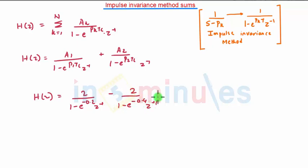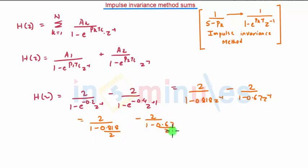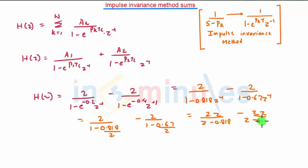We now find the values of the exponential terms: e^(minus 0.2) and e^(minus 0.4). Substituting these values we get 2/(1 minus 0.818 × z^(-1)) minus 2/(1 minus 0.67 × z^(-1)). Converting to positive powers of z, we write this as 2/(1 minus 0.818/z) minus 2/(1 minus 0.67/z). Multiplying numerator and denominator by z gives 2z/(z minus 0.818) minus 2z/(z minus 0.67).